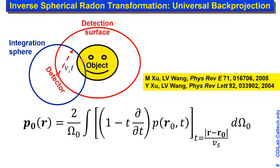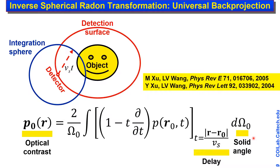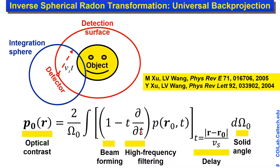Radon never inverted this particular problem, so our field worked hard and found a universal back-projection method that unifies different detection geometries. P-naught is the pressure induced by the laser pulse — that's the quantity we want to recover. We use a solid angle to unify different detection geometries. You run a time delay when back-projecting because the sound signal must propagate to the detector. This is analogous to ultrasound beamforming, but adding the high-frequency time-derivative component yields the exact solution — the most widely used algorithm in our field.